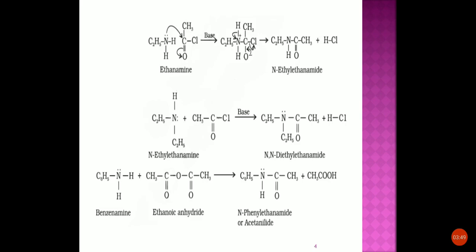In the second reaction, N-ethylethylamine — a secondary amine with two ethyl groups attached to NH — reacts with CH₃COCl. Again, HCl is removed: H from nitrogen and Cl from CH₃COCl. The product is CH₃N(C₂H₅)COCH₃. From both reactions, removing HCl gives the amide product.